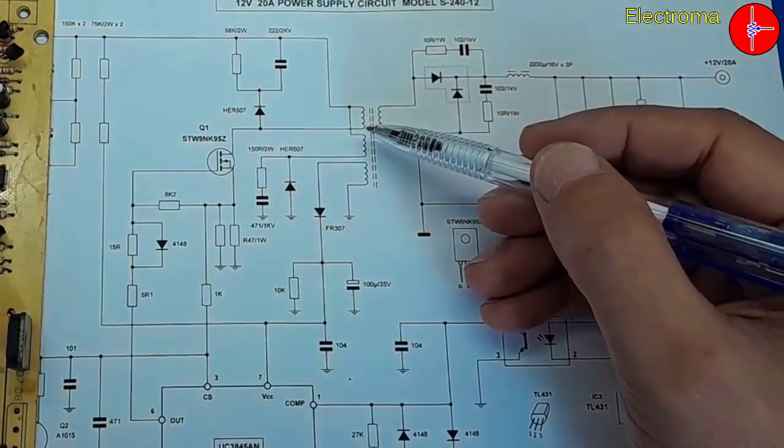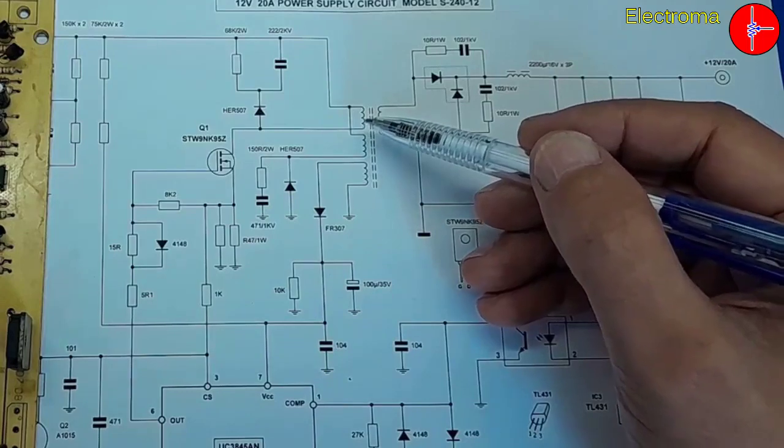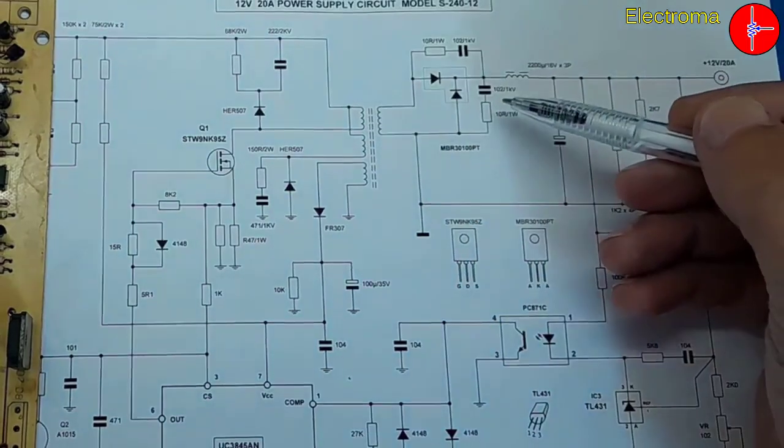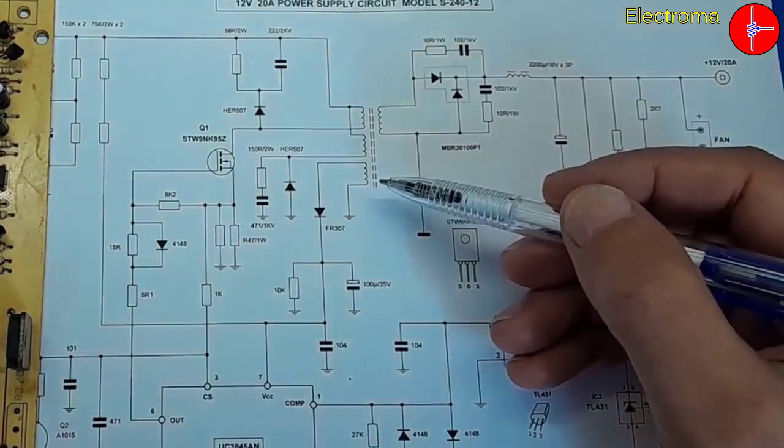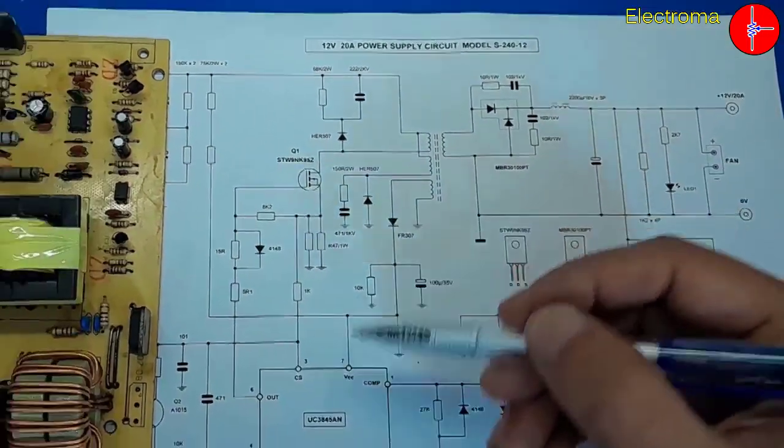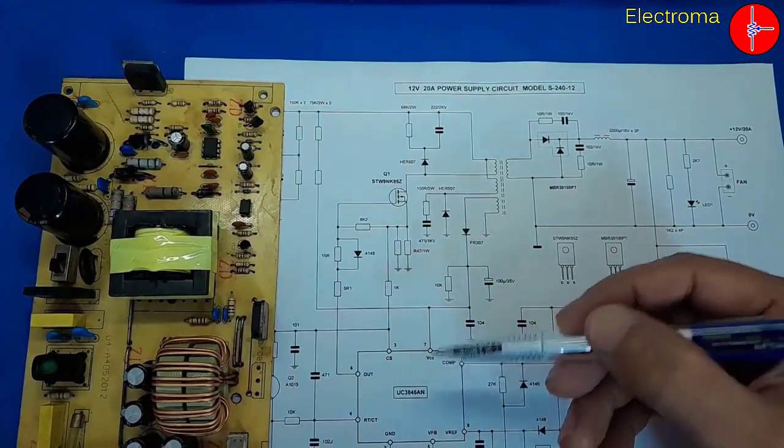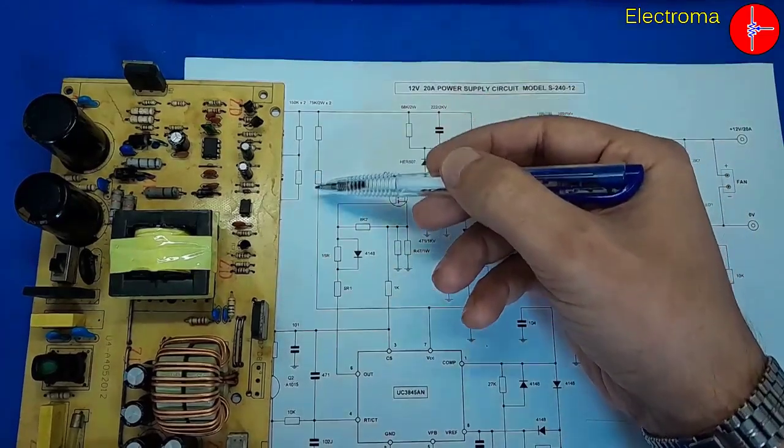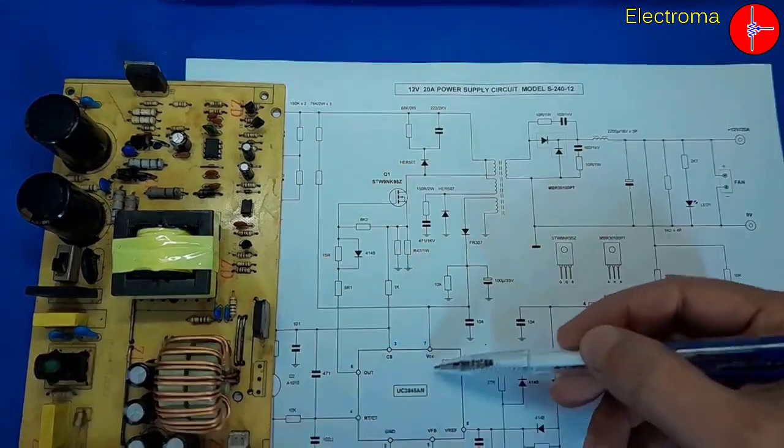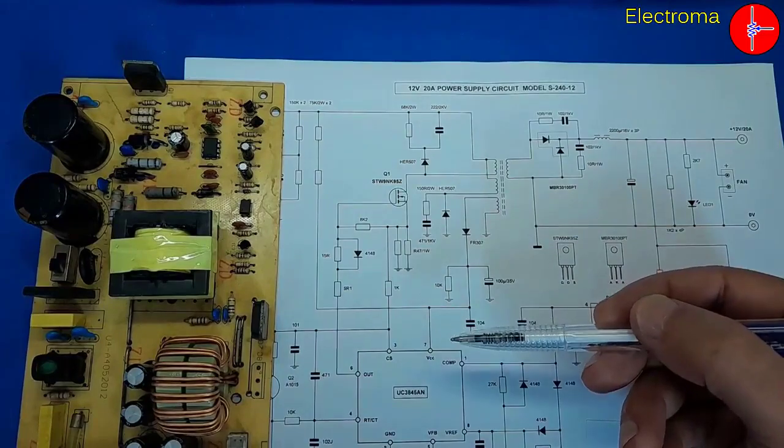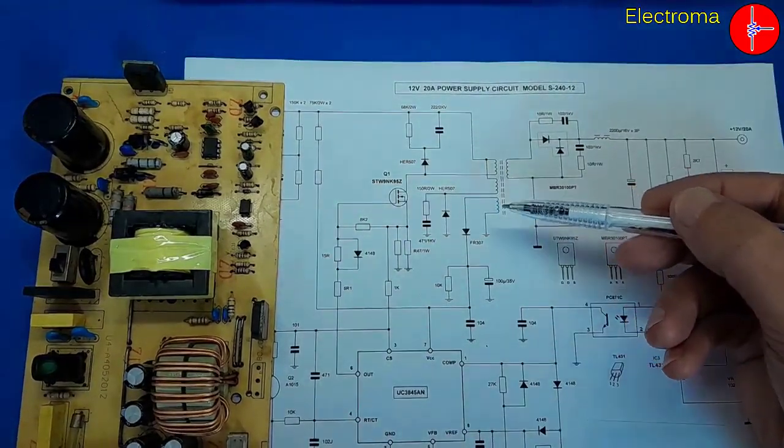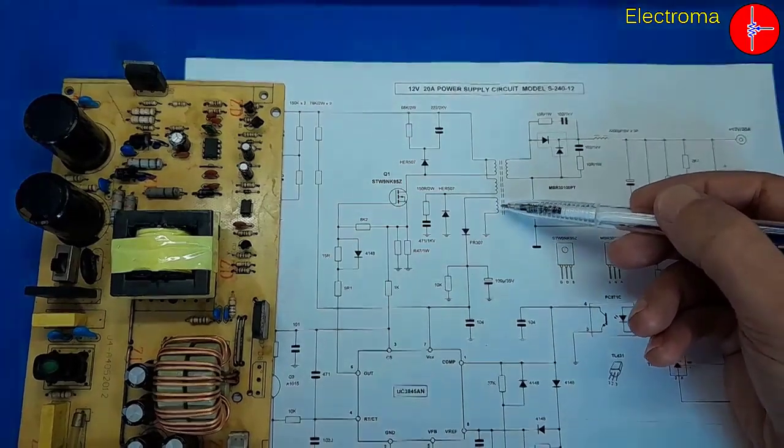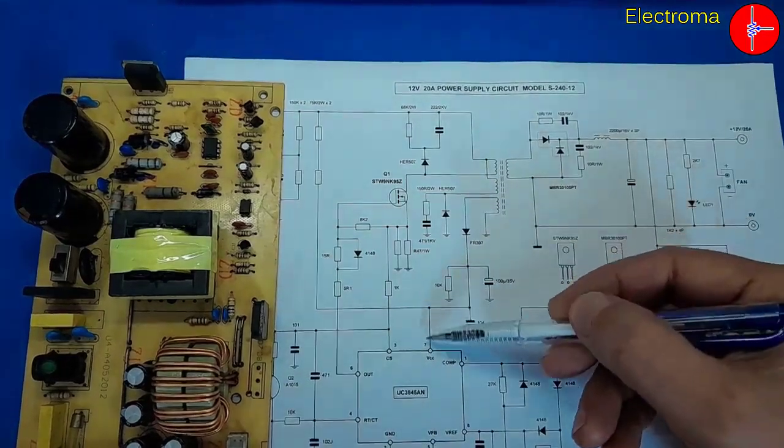The upper coil is the main coil for output voltage generation. The bottom coil is for generating voltage to run the IC. After the startup resistor provides voltage to the IC, there is a secondary or auxiliary coil that provides the necessary voltage to continue the operation of the IC.